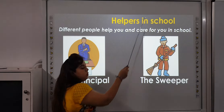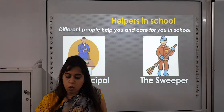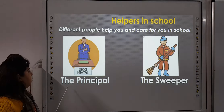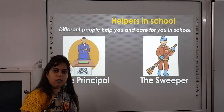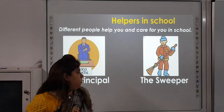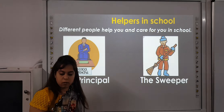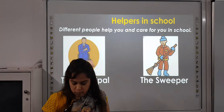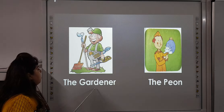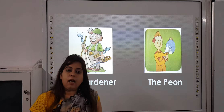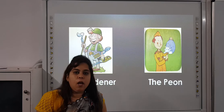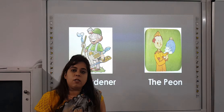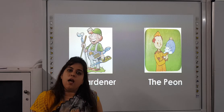Now, helpers in school. We have different helpers in our school who help us and care for us in different ways. The principal is the head of our school. The sweeper is a person who keeps our school clean. The gardener is a person who cares for our school garden. The peon is a person who rings the school bell and helps us in different ways.